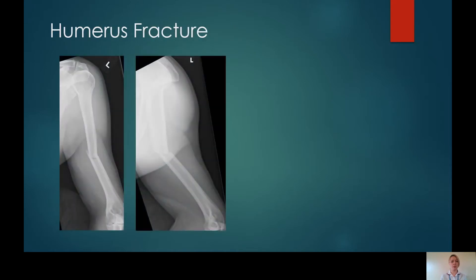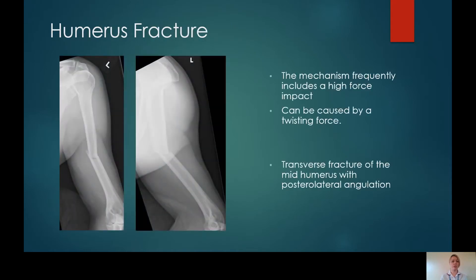We'll start by looking approximately to the elbow joint. Humeral fractures tend to be very obvious — they're difficult to miss — and they're caused by high force injuries. I have also seen them before with a spiral twisting force in the case of arm wrestling. In this case, there is a transverse fracture of the mid humerus with posterolateral angulation.